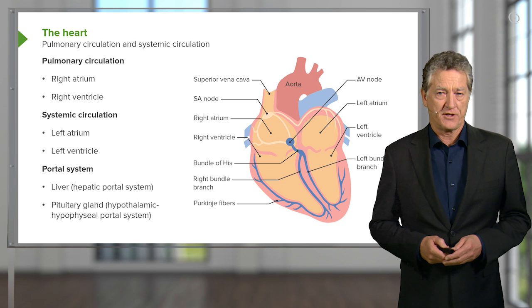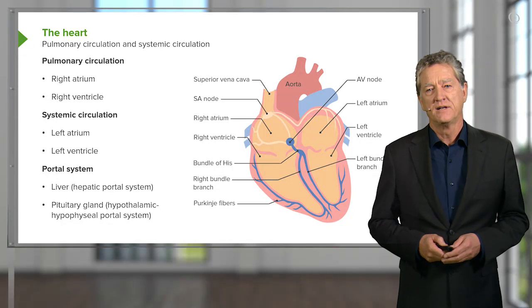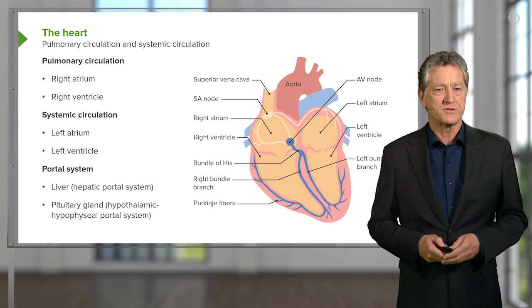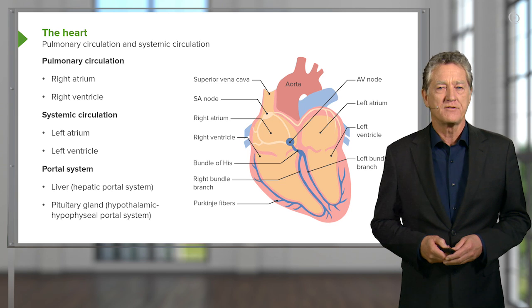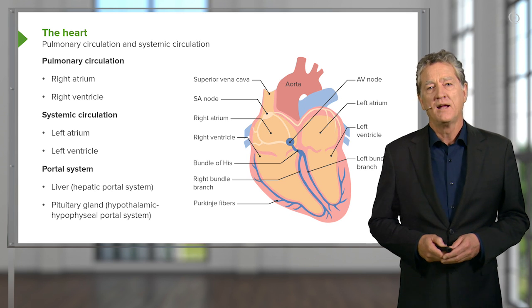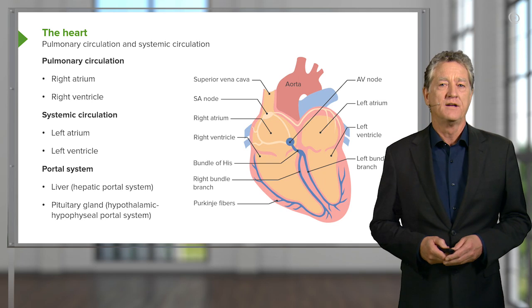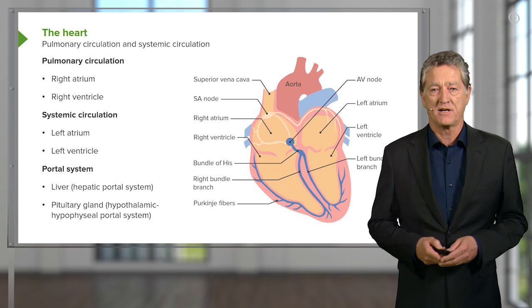The systemic circulation refers to the circulation of blood to all the organs of the body from the left side of the heart. There are also portal system components in the cardiovascular system — these are very specific diversions from the typical supply of blood to tissues. I won't mention them here except to label them as a reminder that these different systems exist, particularly in the liver and later when we look at the pituitary gland as part of the endocrine system.